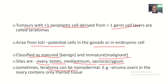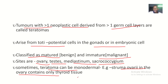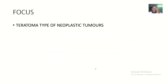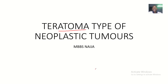Sometimes teratomas can be monodermal — for example, struma ovarii in the ovaries contains only thyroid tissue. There can be ectopic thyroid tissue in the ovaries, since the thyroid is normally in the neck but can be found ectopically as far as the ovaries. This type of teratoma is called monodermal. So that covers the concept of teratomas — now when someone says a neoplastic tumor is a teratoma, you should know what that means.